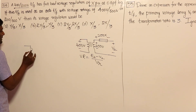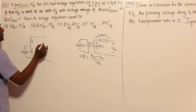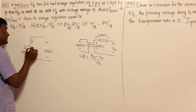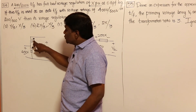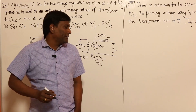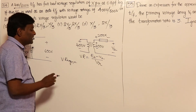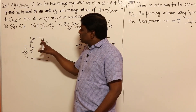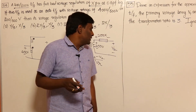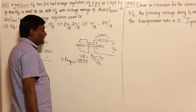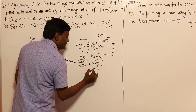First, let us convert to the 400 by 600 configuration. This gives 400 volts on the input side and 200 volts on the series winding, with the output being 600 volts. The voltage drop across the 200-volt winding is 200X. Voltage regulation equals voltage drop divided by rated voltage: 200X divided by 600, which gives X by 3.